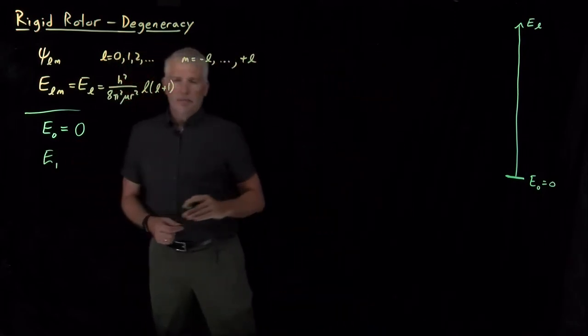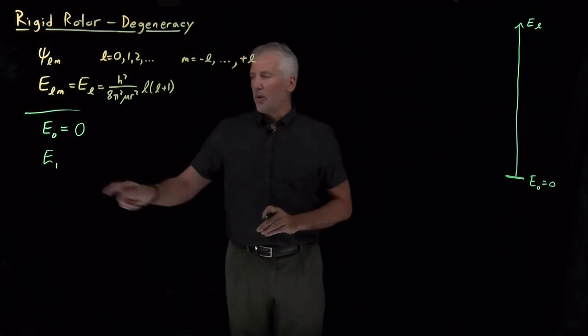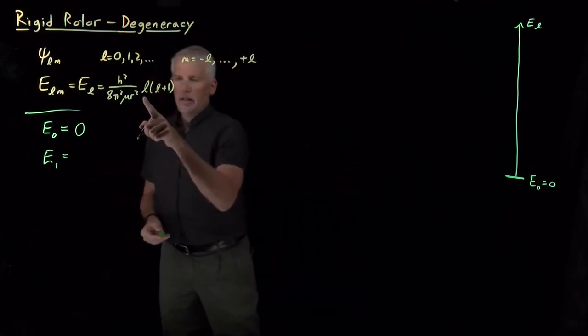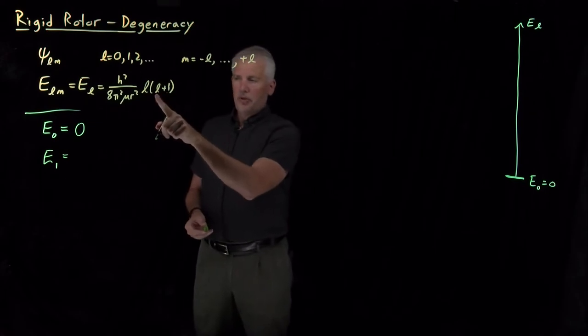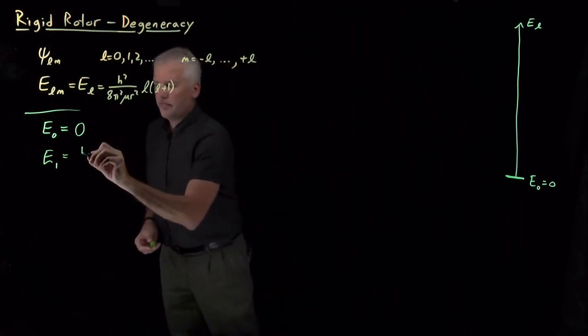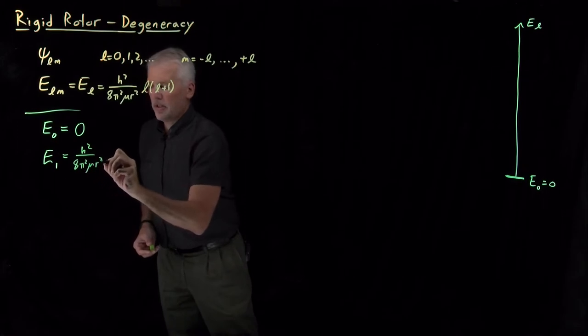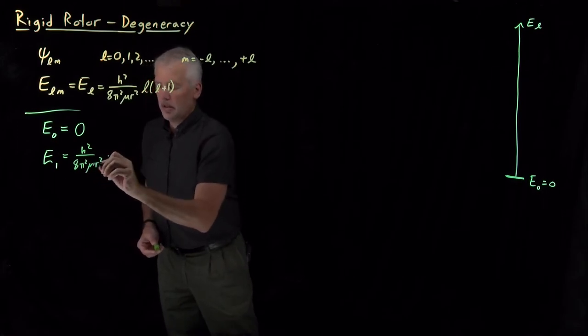L equals 1, the next step up this ladder, the quantum number L equals 1. If I plug in an L equals 1 here, and then L plus 1 is equal to 2, so 1 times 2 is 2. So, ℏ²/(8π²μR²) times 1 and 2.